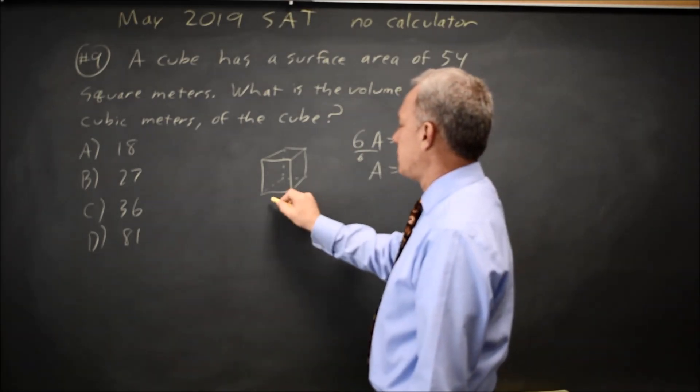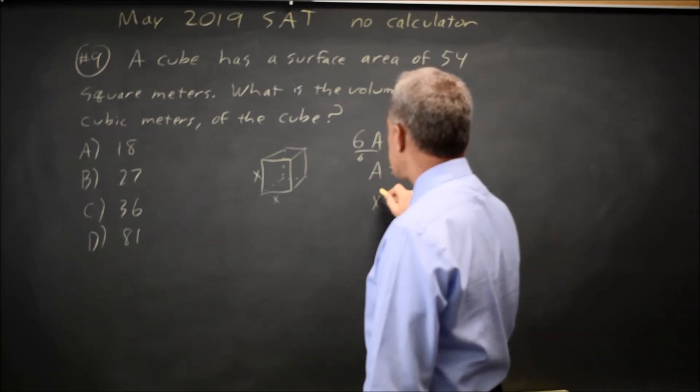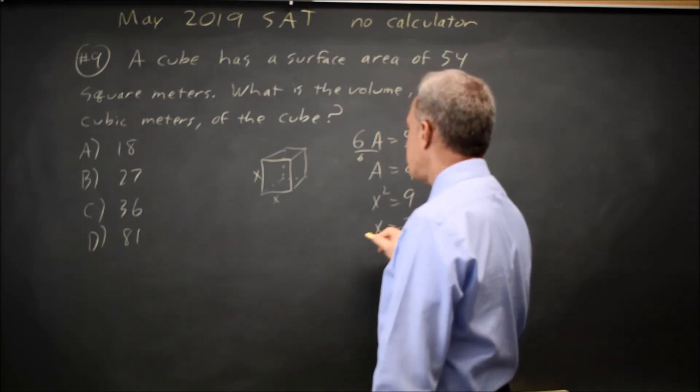And the area of a side is, let's just call each edge x. x squared equals 9, so x equals 3.